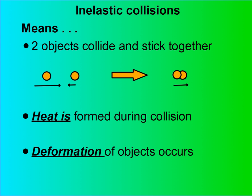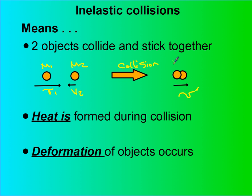Let's look at the second type of collision: the inelastic collision. In an inelastic collision, what that means is that two objects are going to stick together. So while initially we may have had M1 moving at velocity V1 and M2 moving at velocity V2, and then we have a collision, afterwards they're going to move away with some common velocity. They're stuck together. The mass here is going to be M1 plus M2.